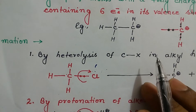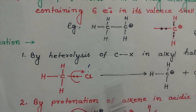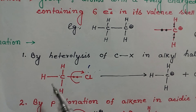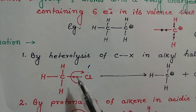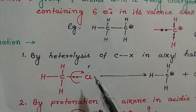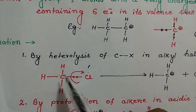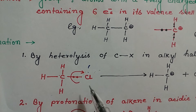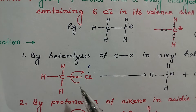Carbocations are formed by hydrolysis of the C–X bond in an alkyl halide. Take a simple alkyl halide, chloromethane. In the C–Cl bond, the shared pair of electrons will reside more towards chlorine, as chlorine is more electronegative. So as a result, it will be delta-negative and the carbon will be delta-positive. A time will come when chlorine will completely take the electron pair on itself, thus breaking the bond heterolytically.